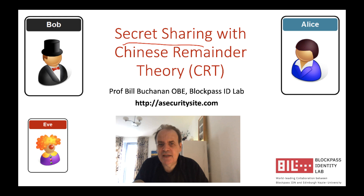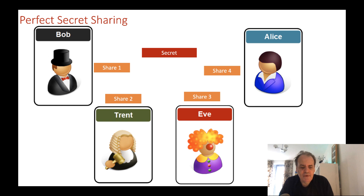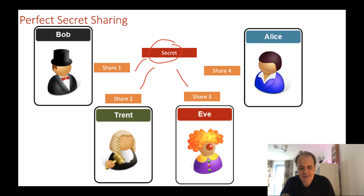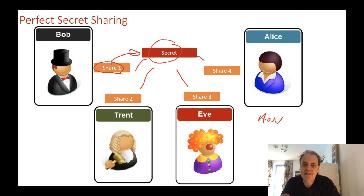Let's look at secret sharing using Chinese remainder theory. With perfect secret sharing, we have a trusted dealer who will split a secret into a number of shares. In this case, Bob, Trent, Eve, and Alice each have a share. In an all-or-nothing scheme, none of the shares can reveal the secret, and we need all of the shares back together again to be able to recover the secret.